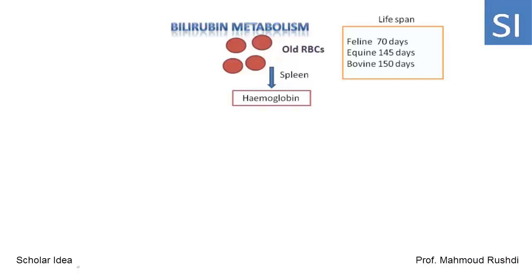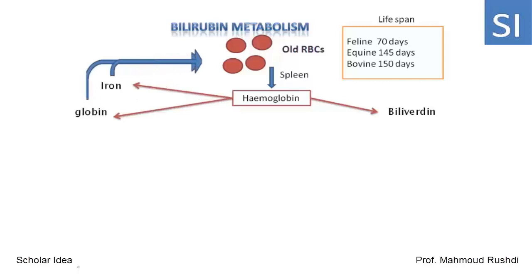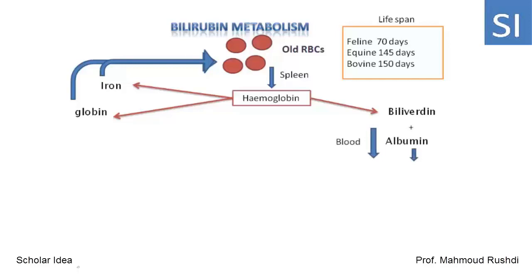In the reticuloendothelial cells, hemoglobin is split into globin and heme. The heme is further split into iron and biliverdin. The globin and iron are utilized for synthesis of new red blood cells. However, the biliverdin, which is insoluble in water, is transported in the blood circulation bound to albumin, which acts as a carrier for the biliverdin.